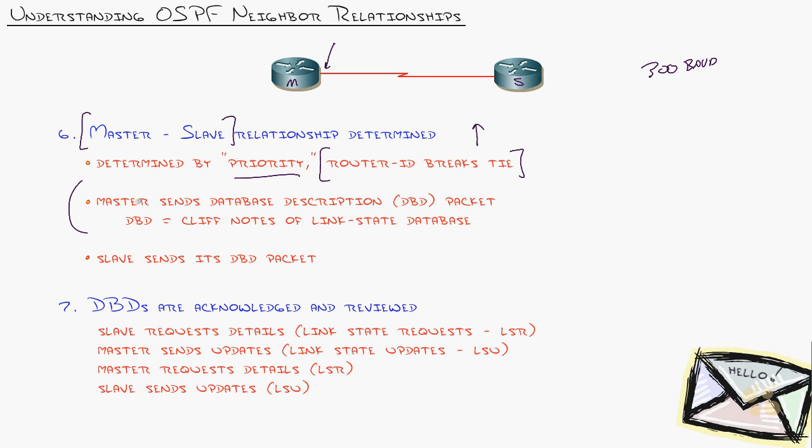You can manually set the master-slave by priority, or most people let the router ID break the tie. The higher router ID becomes the master and sends his DBD first. DBD is a description of the OSPF database, like a Cliff Notes summary. Rather than sending all detailed information and eating up bandwidth on that 300 baud connection, we send a quick summary of the topology table to the slave, then allow him to ask for what's left by sending his DBD packet the other direction.